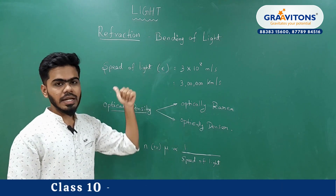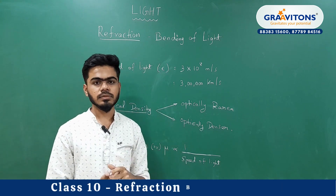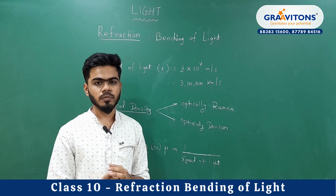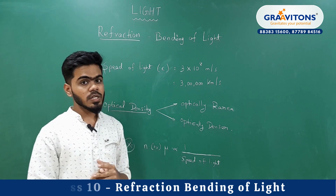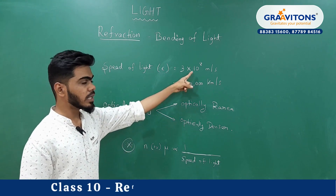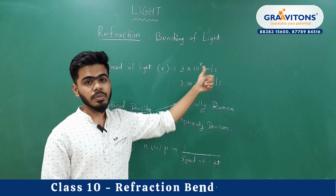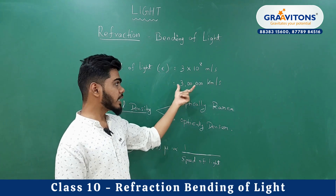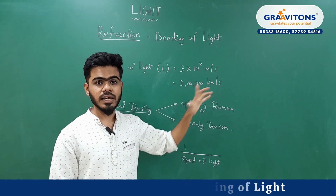Where does light bend, and what is the reason? The speed of light is 3 × 10⁸ m/s, which is 3,000,000 km per second.